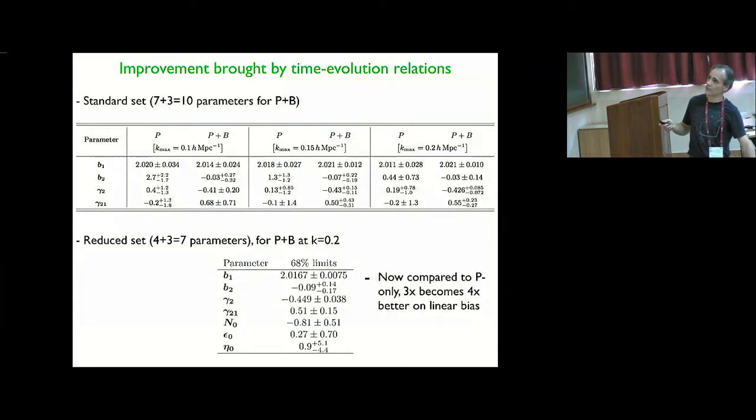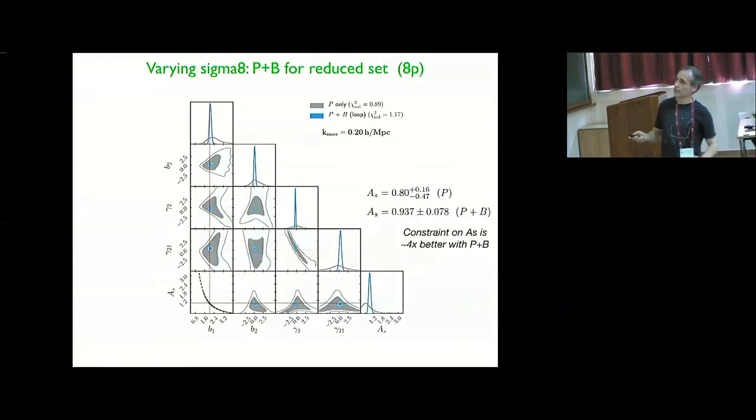And now if you use that model with the seven parameters, now you see that adding bispectrum information improves by a factor of four instead of factor of three. So finally, the last point I want to make is that's interesting in terms of fixed cosmology. One of the most interesting applications of this is what happens now if I don't know the amplitude of the power spectrum. In other words, if I don't know sigma eight. So now I have an extra parameter. Instead of seven, I have eight.